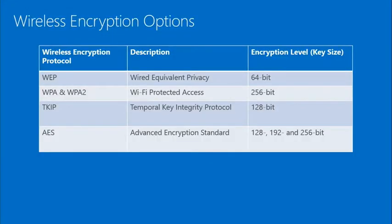Looking at the wireless encryption chart, we have WEP — Wired Equivalent Privacy — and WPA and WPA2, Wi-Fi Protected Access, with different encryption key sizes. You need to ensure that your wireless access points and your wireless devices use the same encryption option.